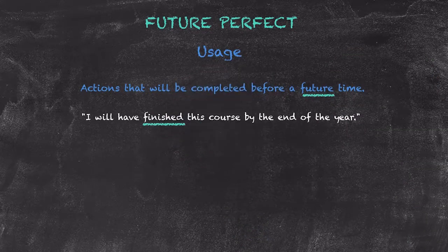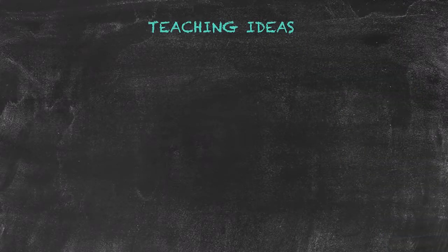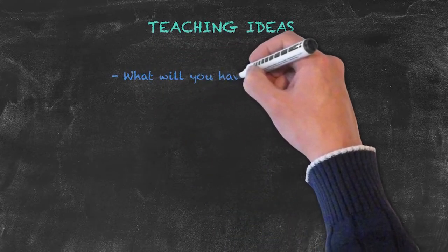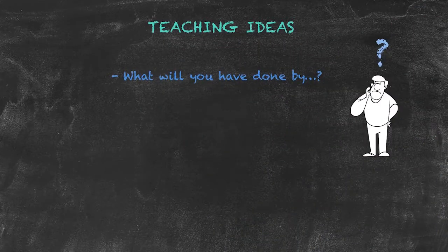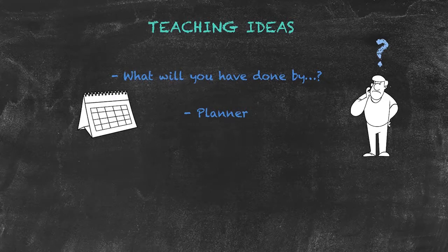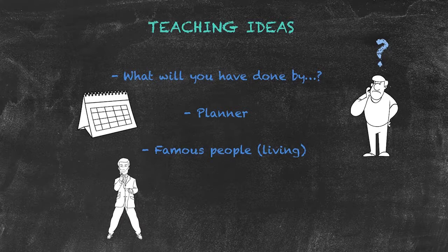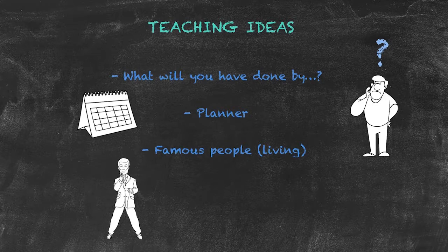Teaching ideas for the future perfect tense involve asking questions like 'What will you have done by the age of 50?' or 'What will you have accomplished by next year?' We could use monthly calendars for students to fill out, then ask 'What will you have done by the end of the month?' We can also use famous people — choose a famous actor or politician and ask 'How many films will he have made by the time he's 50?' or 'How many films will she have directed by 2025?'